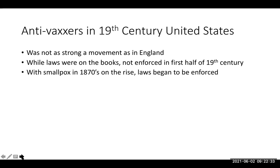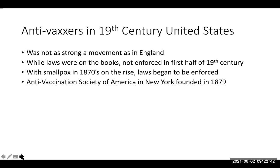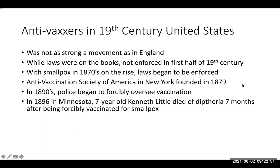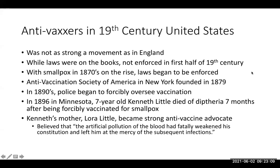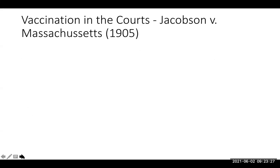As urbanization occurred and smallpox rose in the 1870s, laws started to be enforced, and the first anti-vaccine society was founded. Police in the 1890s started to forcibly oversee vaccinations. One anecdote that sounds like it could happen today: in the 1890s, a young boy named Kenneth Little died of diphtheria seven months after being forcibly vaccinated for smallpox. His mother felt the vaccine had weakened him and made him susceptible to diphtheria — it had polluted his clean body. The first major court challenge was the Supreme Court case Jacobson versus Massachusetts in 1905.